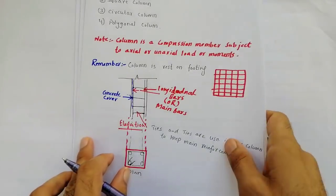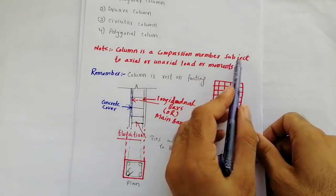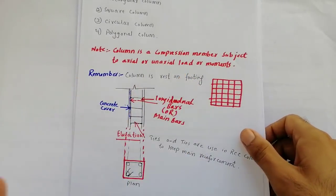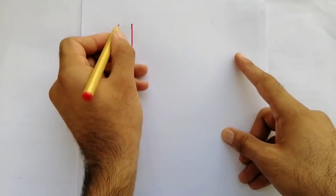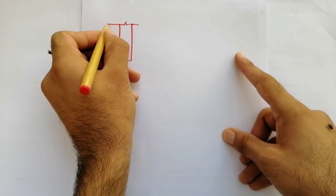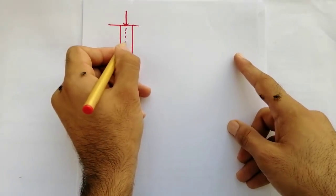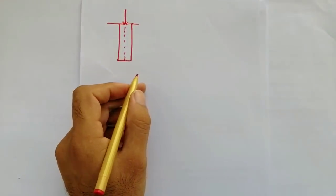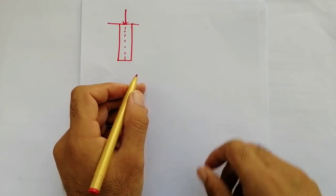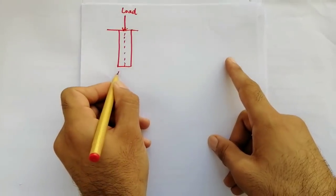Axial and uniaxial load. So this is column. When the load comes on the center of the column, this is centerline for this column. When the load comes on the center, this is called axial load.